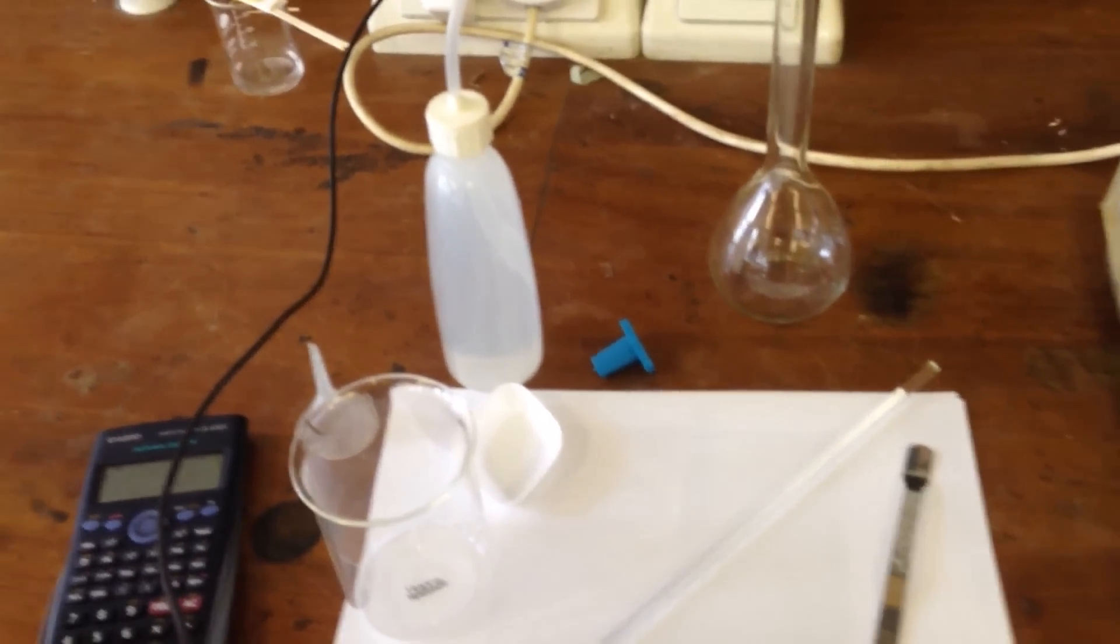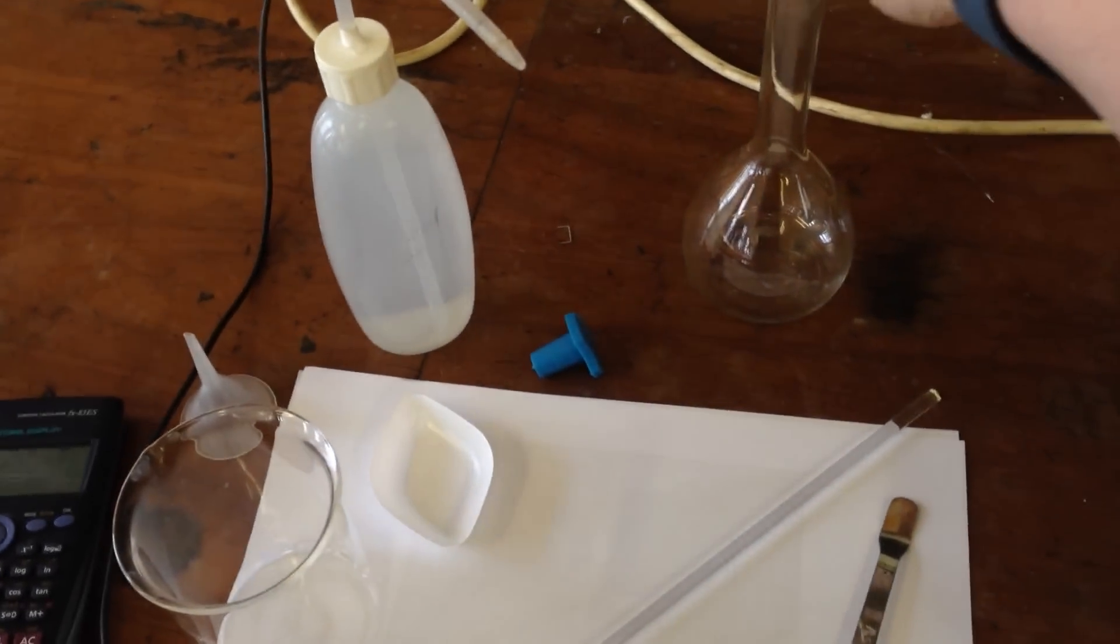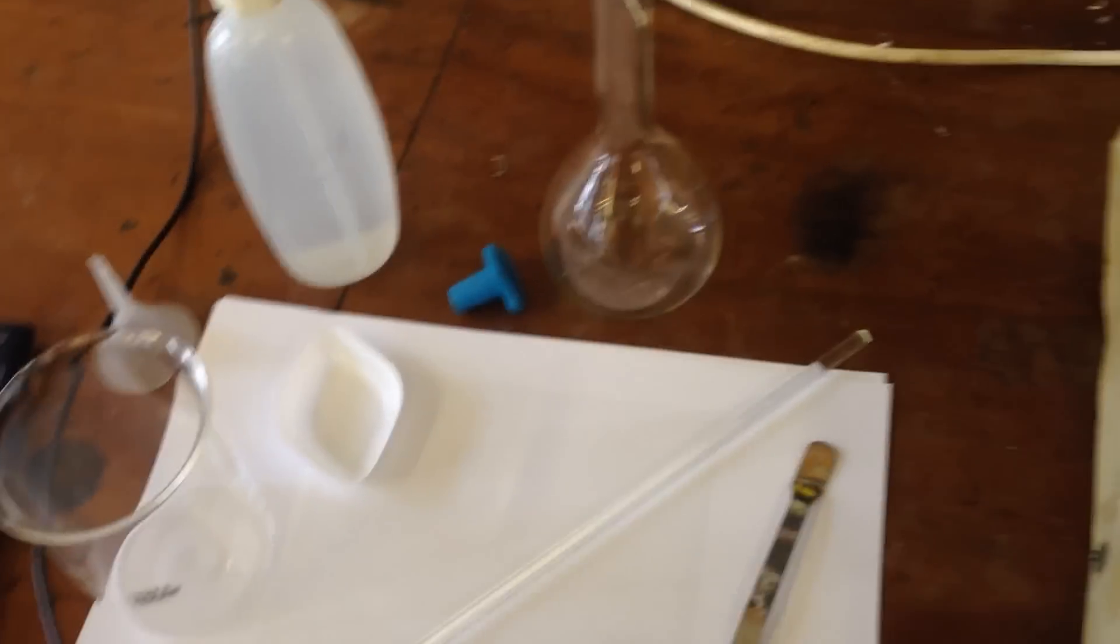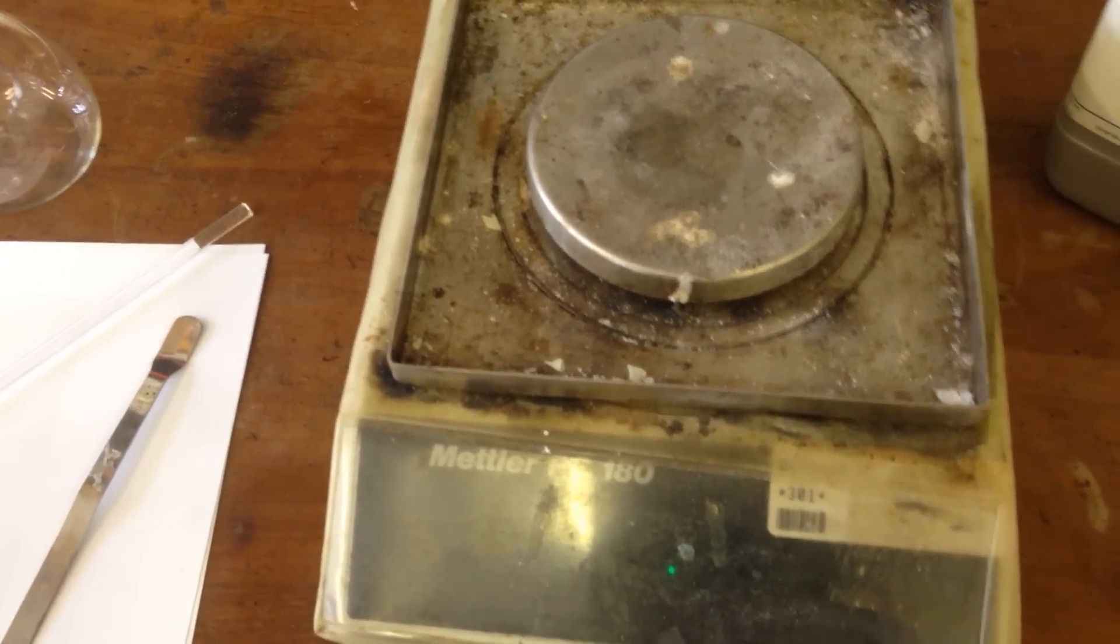In this video for O-level chemistry, I'm going to be showing you how to make a standard solution. We need a beaker, a weigh boat, a funnel, a squeezy bottle of deionized water, a volumetric flask, a stopper, and we need a balance that is very accurate.